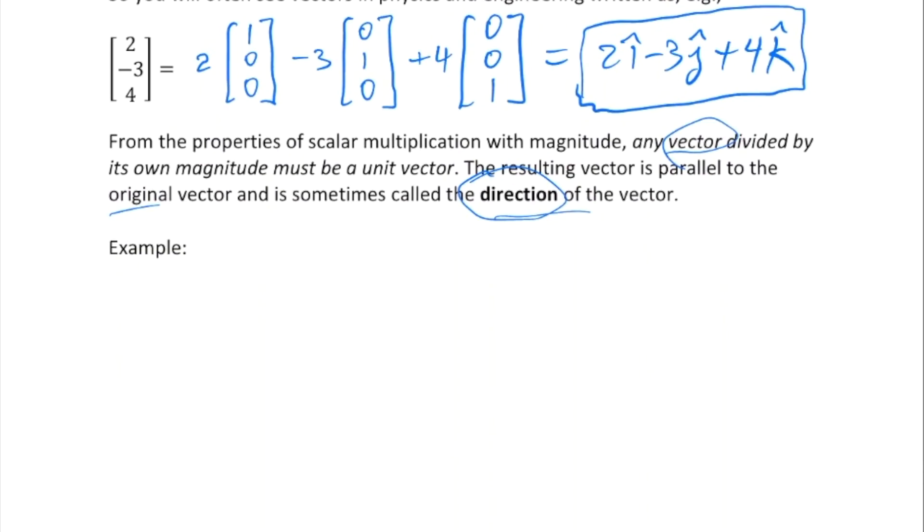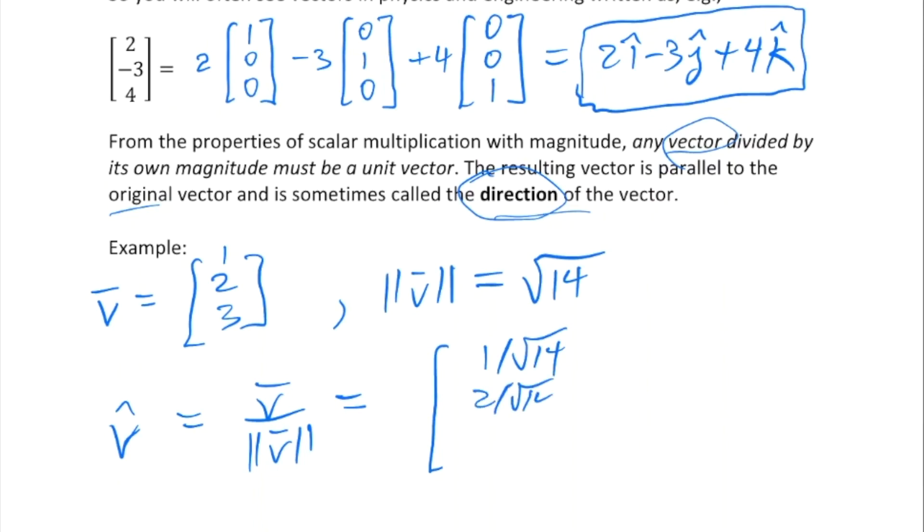Let's come up with an example. Suppose I had this vector v is [1, 2, 3]. Its magnitude would be 1 + 4 + 9, which is the square root of 14. What I would call v hat is v divided by its own magnitude, which would be [1/√14, 2/√14, 3/√14]. That would be the direction of v, a unit vector parallel to v.